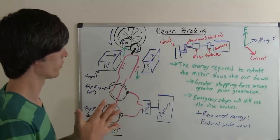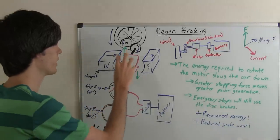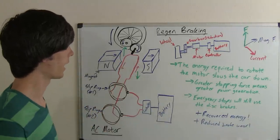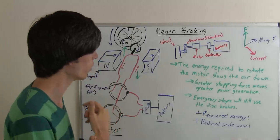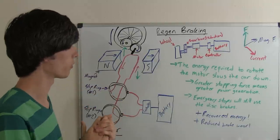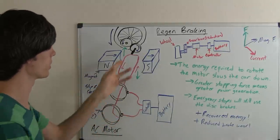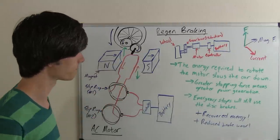The energy required to rotate this motor is what's slowing you down. You're putting energy in to rotate this motor, and that energy causes your car to slow down. How do you generate more? The greater your stopping force, the greater your power generation is going to be, because the greater your force on this wire is going to be.